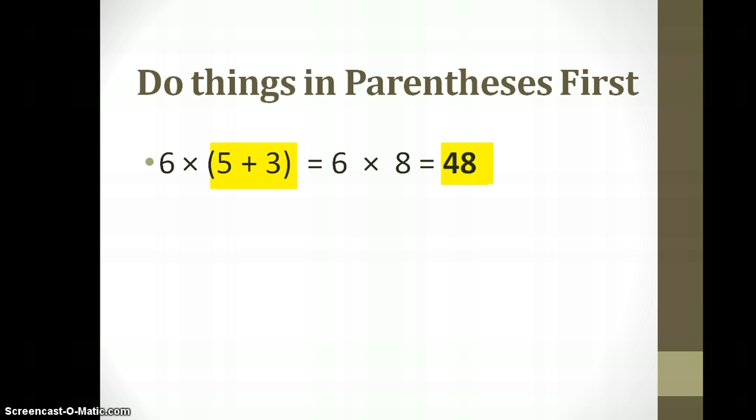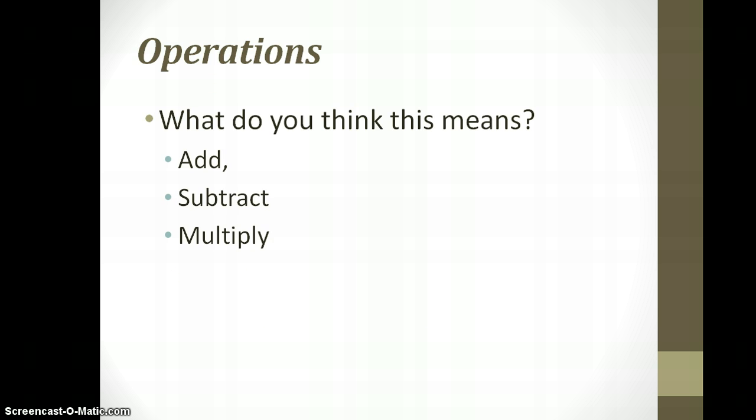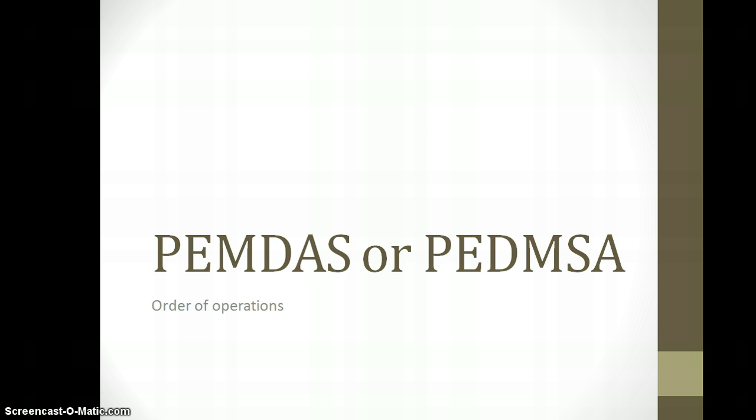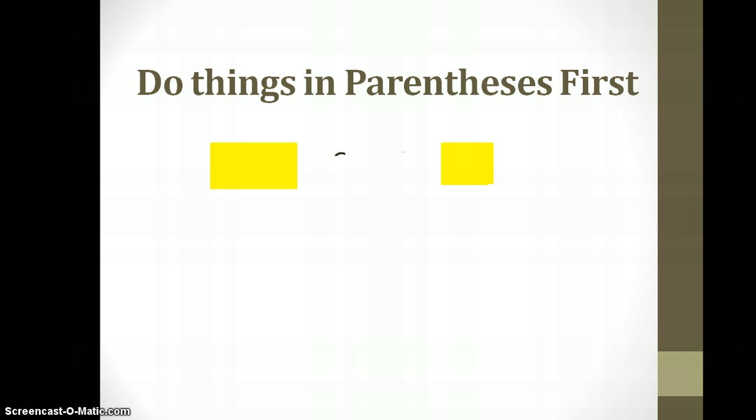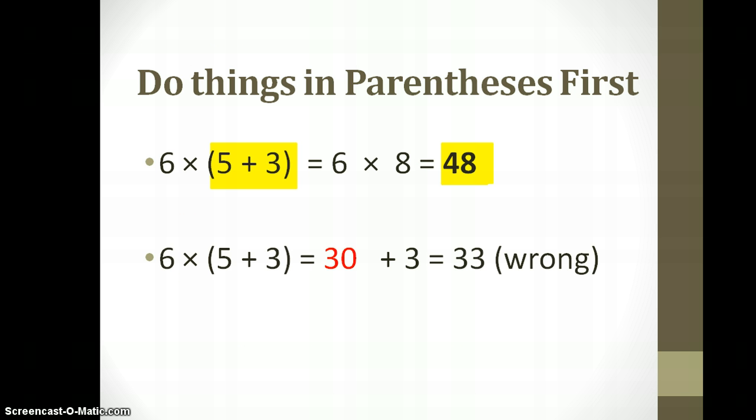You've got to do what's in the parentheses first. So right here you've got 5 plus 3 and it's in the parentheses so it comes first. So the P for our PEMDAS starts with parentheses. So here if you try to multiply the 6 times 5, you would have gotten the wrong answer. You have to do the 5 plus 3 first because that's in the parentheses.